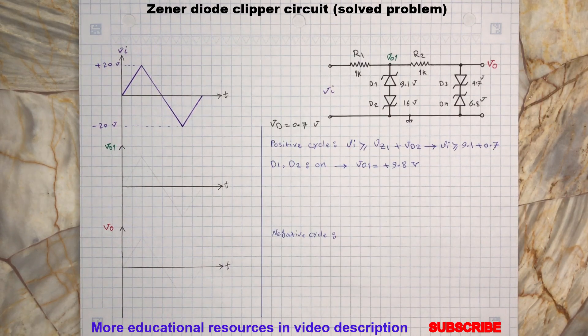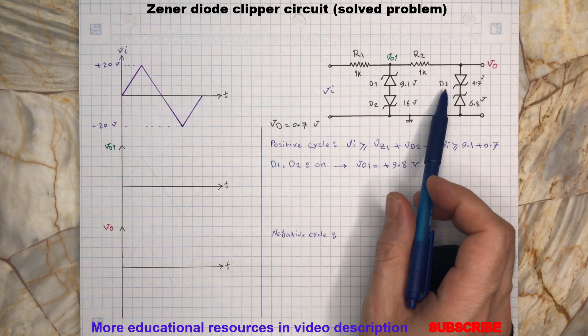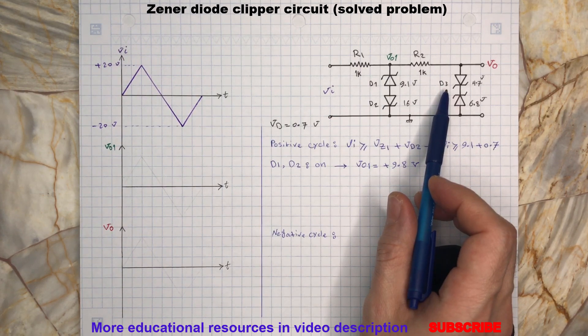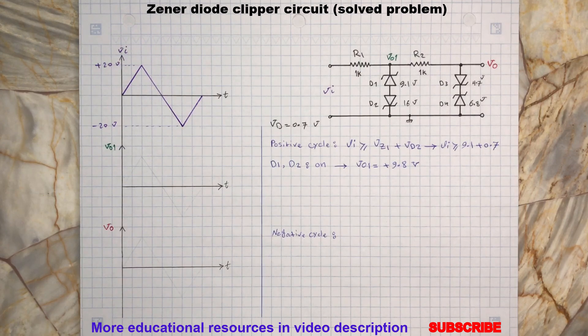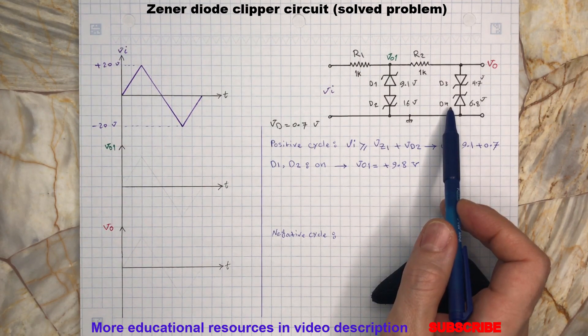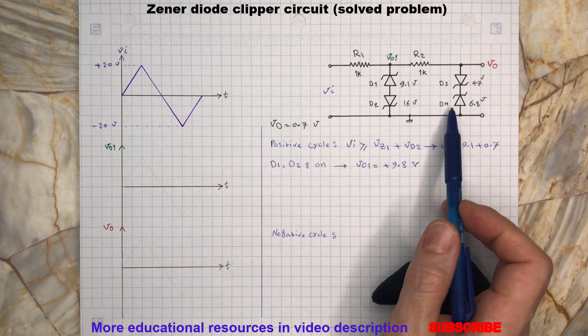At the same time, the v01 terminal is connected to D3 through the resistor R2. Therefore D3 will be forward biased and will need only 0.7 volt to conduct, while D4 is reverse biased which will need 6.8 volt to be at its Zener breakdown region to turn on.